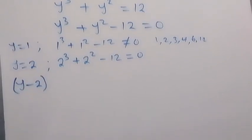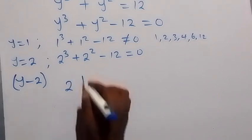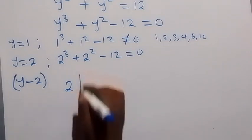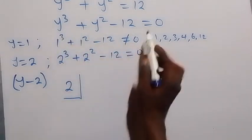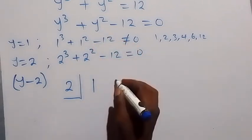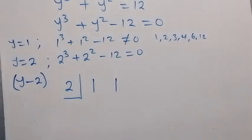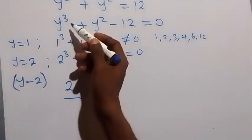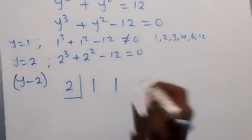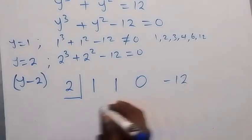To find the other factor, we use synthetic division, dividing the polynomial by 2. The coefficients of y cubed plus y squared minus 12 are 1, 1, 0, and negative 12 — noting that the y to the power of 1 term is missing, so its coefficient is 0.